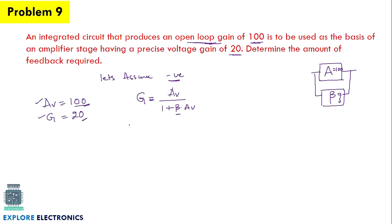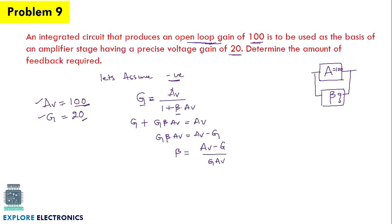Let us rearrange this expression by multiplying through. It becomes G plus G·beta·Av equals Av. We can rearrange to get G·beta·Av equals Av minus G. So beta equals (Av minus G) divided by G·Av. After simplification, Av terms cancel, giving a simpler expression.